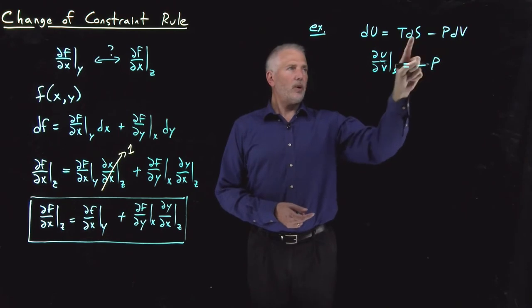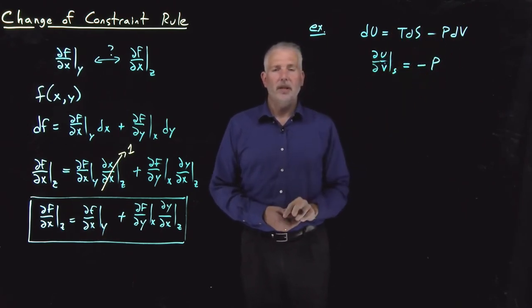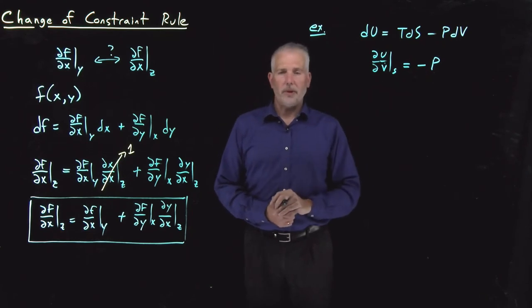∂u/∂V at constant S is equal to negative pressure. So ∂u/∂V while holding S constant, so this term goes away, ∂u/∂V at constant S is equal to negative pressure. That much we know just from the fundamental equation.